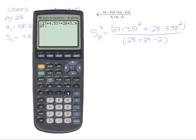Close that parenthesis, then hit divide by, open a new parenthesis, do 28 plus 29 minus 2. Close that parenthesis up and press enter. So you get the answer 18.0493.